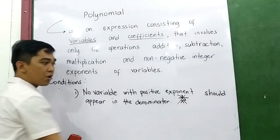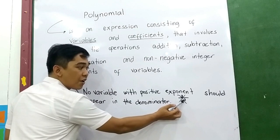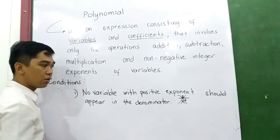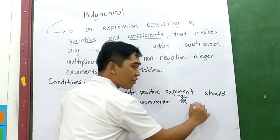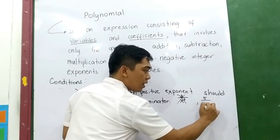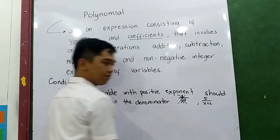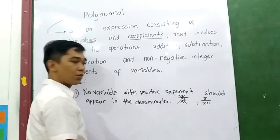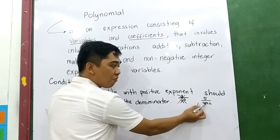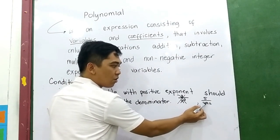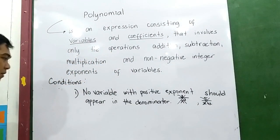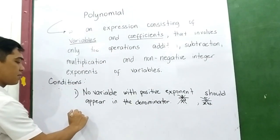Why? Because the exponent of the variable in the denominator is positive. Another example: if you have 5 over (x plus 2), the variable has a positive exponent. So that means this is not a polynomial.